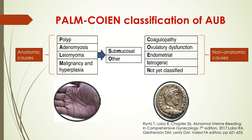P stands for polyp, A for adenomyosis, L for leiomyoma, M for malignancy and hyperplasia, C for coagulopathy, O for ovulatory dysfunction, E for endometrial, I for iatrogenic, and N for not classified.